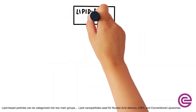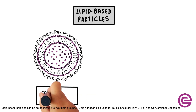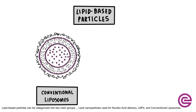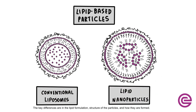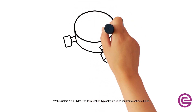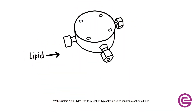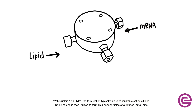Lipid-based particles can be categorized into two main groups: lipid nanoparticles used for nucleic acid delivery (LNPs) and conventional liposomes. The key differences are in the lipid formulation, structure of the particles, and how they are formed. With nucleic acid LNPs, the formulation typically includes ionizable cationic lipids, and rapid mixing is then utilized to form lipid nanoparticles of a defined small size.